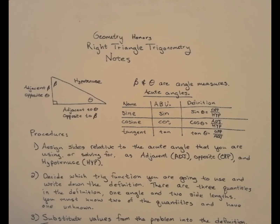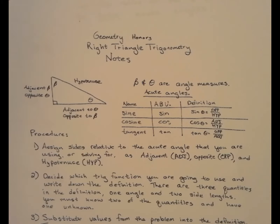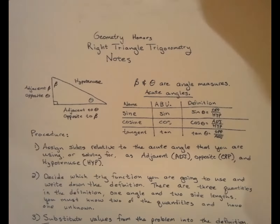This is the first of three videos for right triangle trigonometry. We are going to simultaneously go through the last three sections of chapter 7 — sections 7.5, 7.6, and 7.7 — which are all about right triangle trig. I teach it as a whole unit instead of focusing on sine, then cosine, then tangent separately as the textbook does.